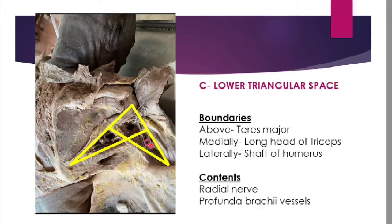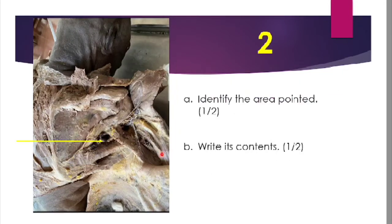C is the lower triangular space. Above you have teres major, medially the long head of triceps, and laterally the shaft of the humerus — note that in the quadrangular space it was the surgical neck, whereas here it is the shaft. The contents are the radial nerve and profunda brachii vessels. So the answer to the second question is that the area pointed is the upper triangular space, and its contents are the circumflex scapular vessels.